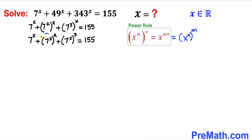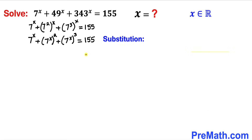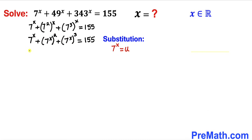As you can see in this next step, to make our job easy let's go ahead and make a substitution. I'm going to call 7 power x as u. So therefore after substitution this is going to become u plus u squared plus u power 3 equals to 155.